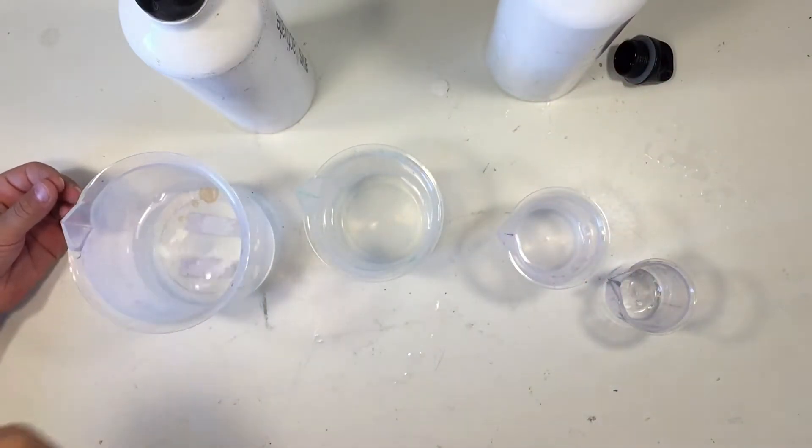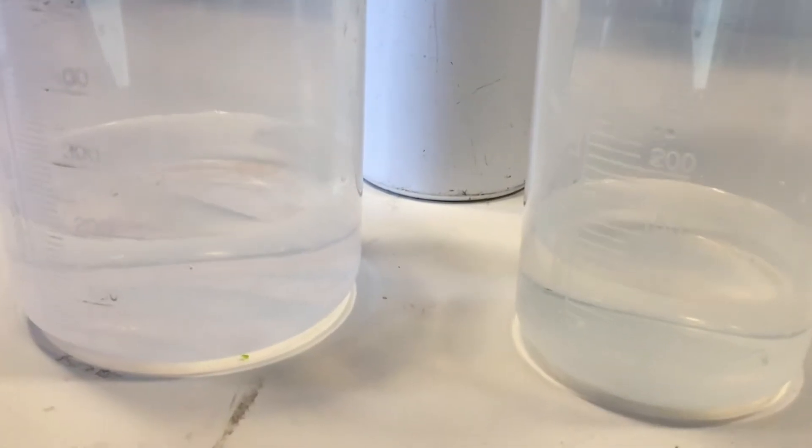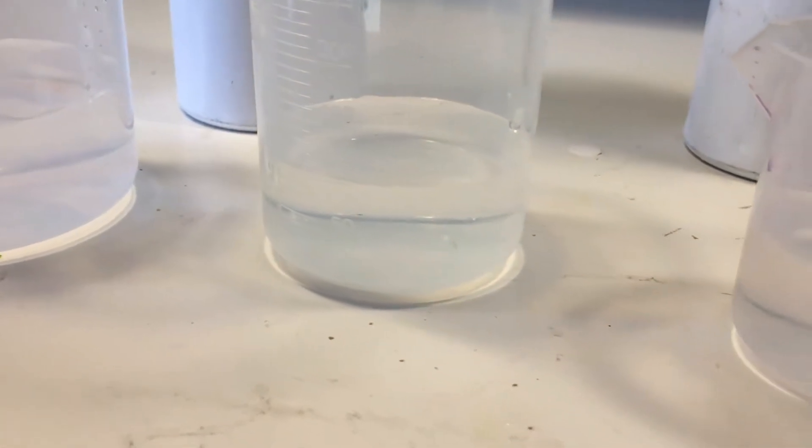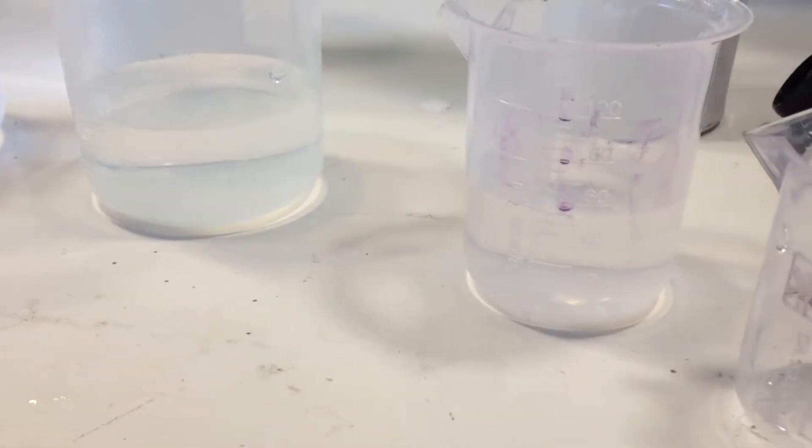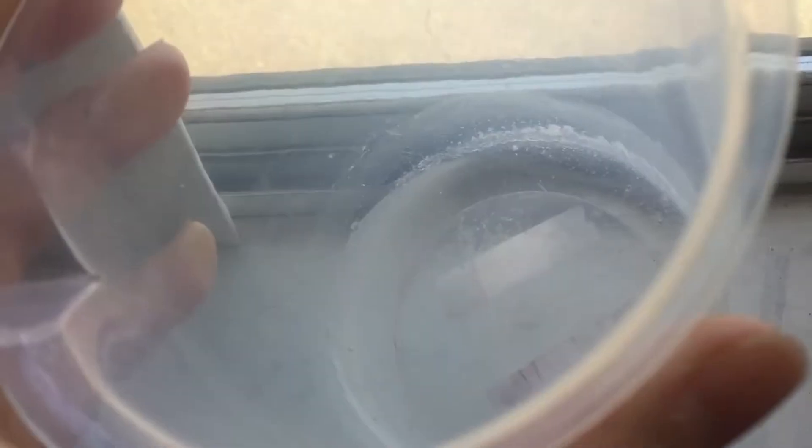In the largest beaker, we have the most amount. In addition to just wanting to see what it looks like when it evaporates, we also want to see which beaker would evaporate the fastest because the largest beaker, even though it has more, it does have a larger surface area.